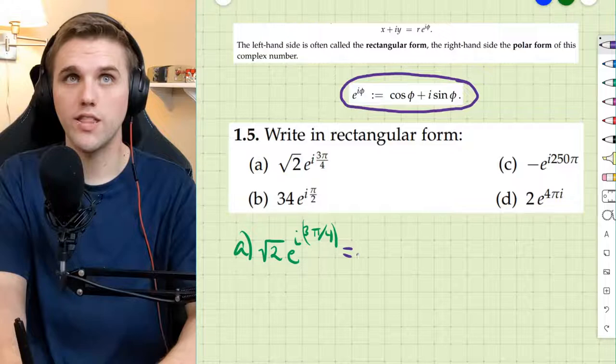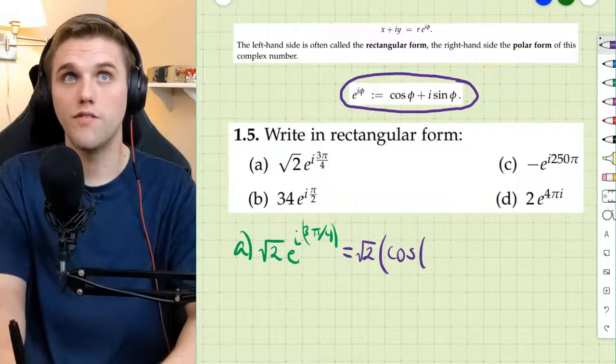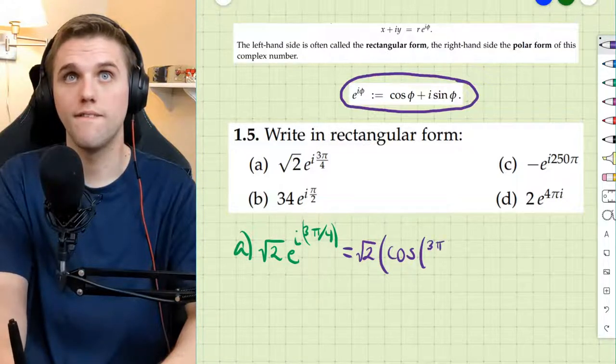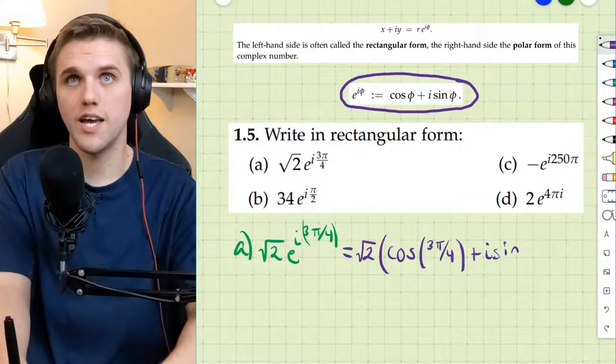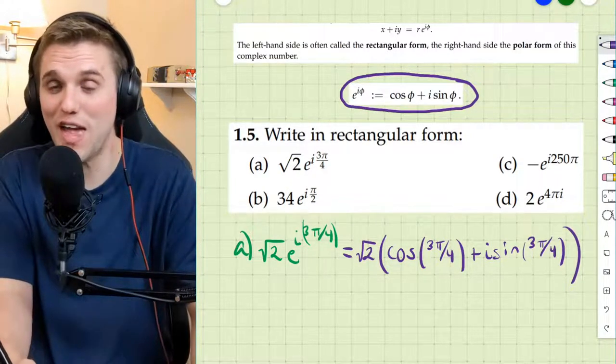So I can rewrite this as the square root of 2 times cosine of 3π/4 plus i sine of 3π/4. And now I just have to simplify and that's it.